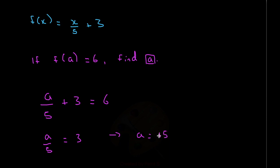And we can check that — if we put in 15 instead of x, we get 15 over 5 is 3, plus 3, which is 6, which is our output.